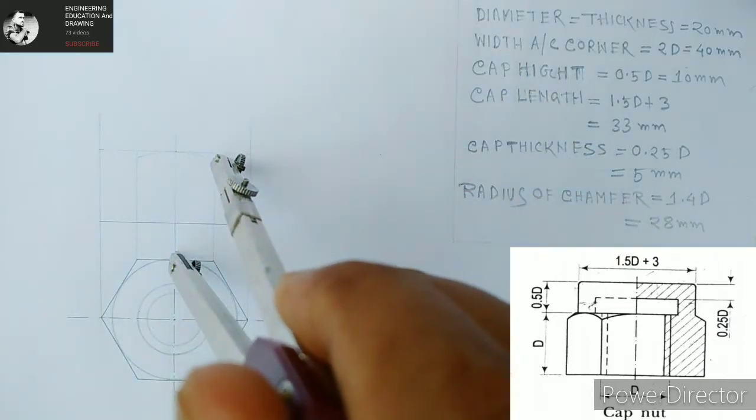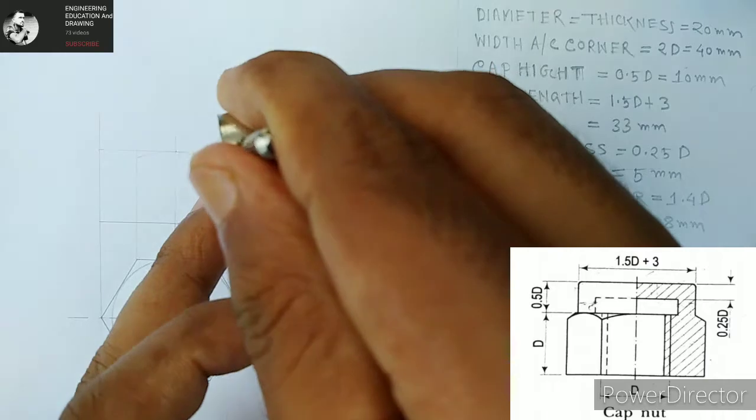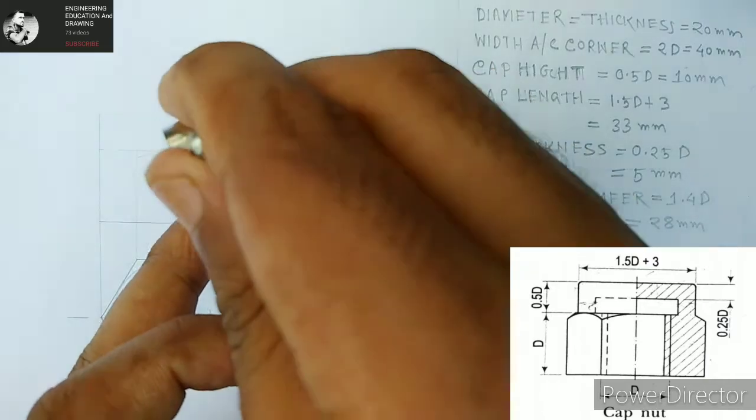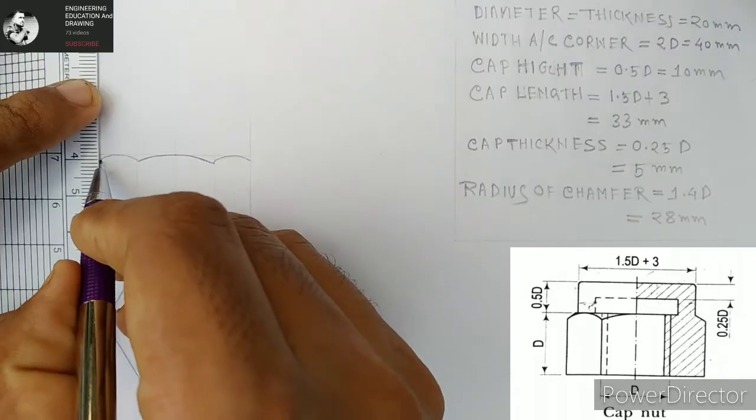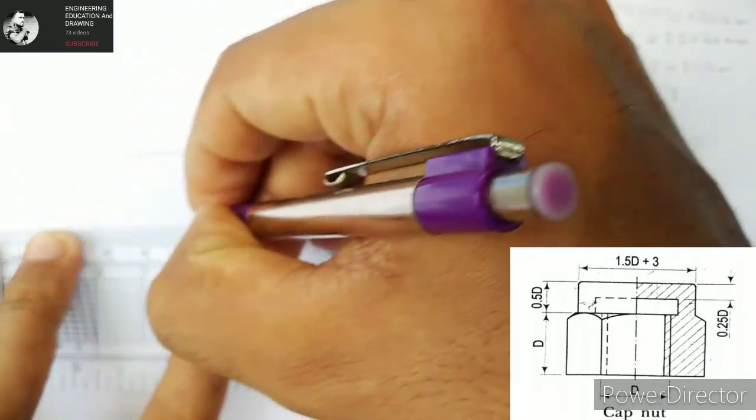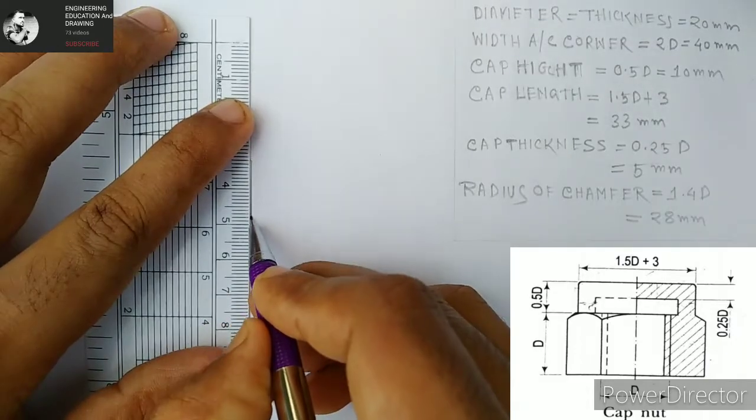Now we're going to do the chamfering. So we are taking 28 as radius and making this arc. This arc we made by trial and error method.